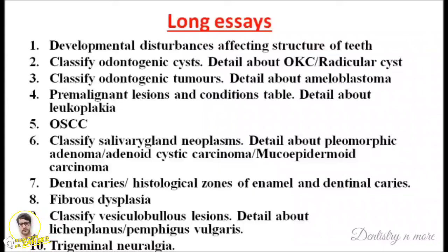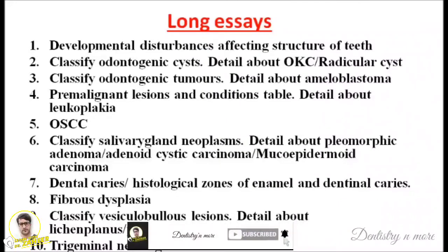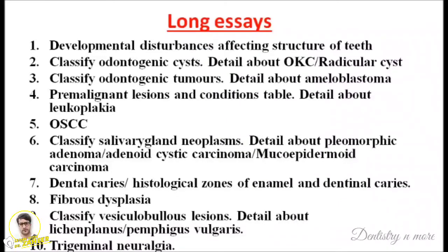The sixth important question is classification of salivary gland neoplasms. You should be thorough about the classification of odontogenic cysts, odontogenic tumors, and also salivary gland tumors. Along with the classification, from that particular chapter you should be thorough about pleomorphic adenoma. They can even ask a note on adenoid cystic carcinoma and also mucoepidermoid carcinoma — all three lesions you must learn.